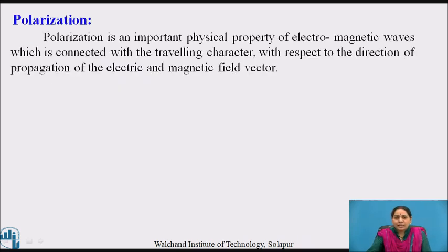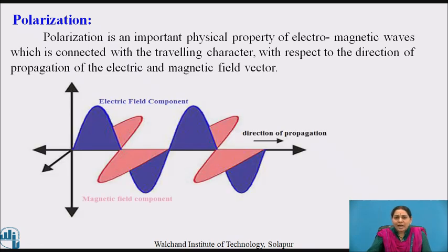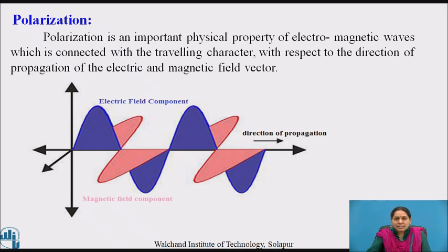Let us see what is polarization. The transverse nature of light proves the polarization property. Light coming from a common light source is unpolarized light. It can be transformed into different types of polarization by using different optical devices. The state of polarization cannot be recognized by our eyes. The knowledge of polarization is essential for understanding the propagation of electromagnetic waves through waveguides and optical fibers. Polarization is an important physical property of electromagnetic waves, connected with the traveling character with respect to the direction of propagation of electric and magnetic field vectors.